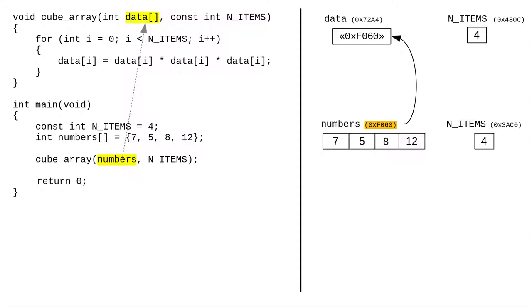Let's look again at the cube_array function and its call. Because the argument is an array, its memory address gets copied to the parameter. And again, the data variable in the function is sharing the memory with the numbers array in main.